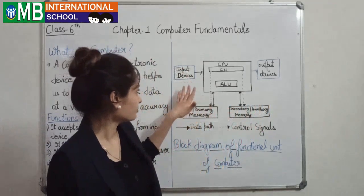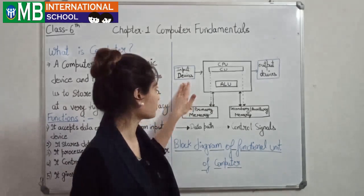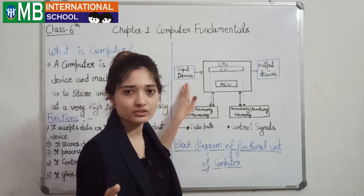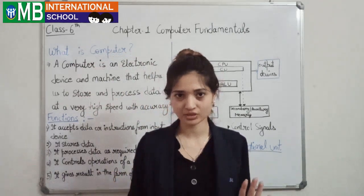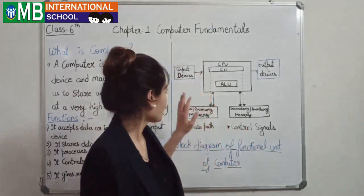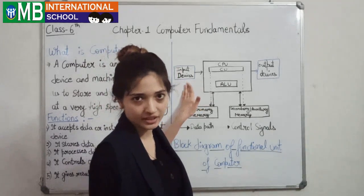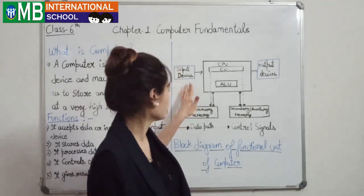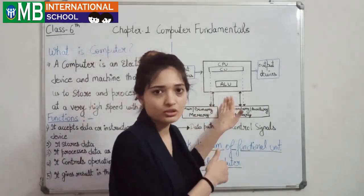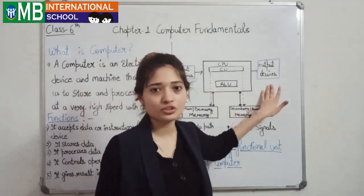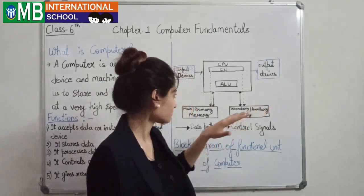For example, through the input device we enter data — like using Excel or Word. Then it processes in the CPU. Then in the output device, the results are shown to the user.